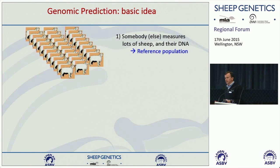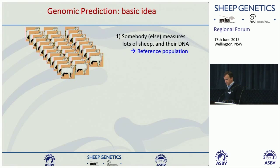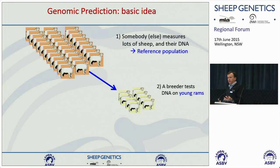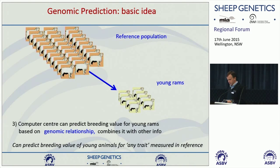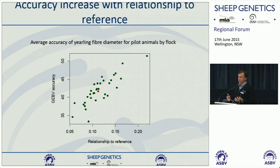The basic idea is that you've got a reference population where you're recording all the detail for hard-to-measure traits and taking DNA tests as well. From that information, a ram breeder can take a DNA sample from animals, and we can make a prediction based on the measurements and patterns seen between DNA tests and those measurements in the reference population, and use that to predict breeding values for animals in a commercial breeder's flock.